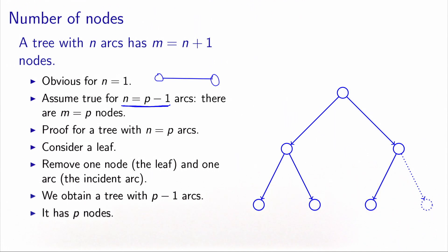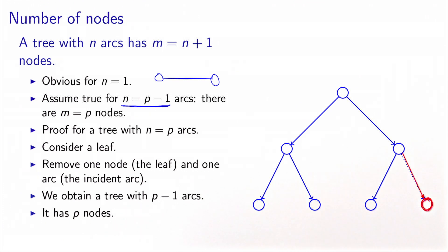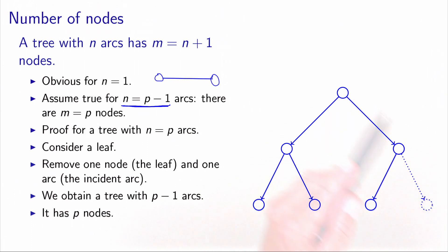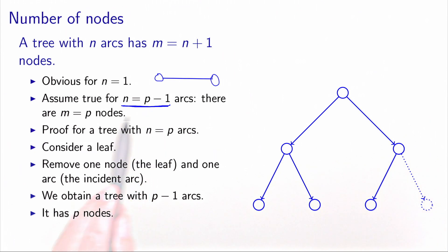In this tree with p arcs, we need to consider a leaf — we know that there is at least one leaf. So let's take this leaf here. Because it's a leaf, there is exactly one arc which is incident to it. Now we remove the node and the incident arc. What we obtain is a tree with one less arc, so with p minus one arcs. Because of the induction assumption, we know that this tree has p nodes.